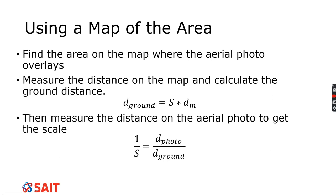What's key is that once you've calculated the ground distance from the map, the ground distance does not change — whether you're looking at a map or an aerial photo, it doesn't matter what scale you're using. Using that as our constant, we measure the same two points on the aerial photo to get that photo distance. Then we calculate s by taking the ground distance from the map, multiplying by one, and dividing by the distance on the aerial photo. That gives us our one-colon scale number.